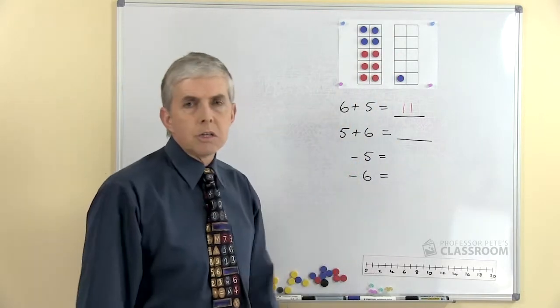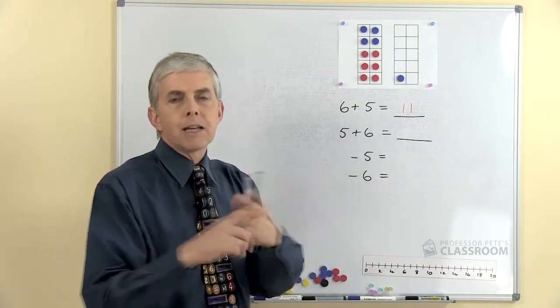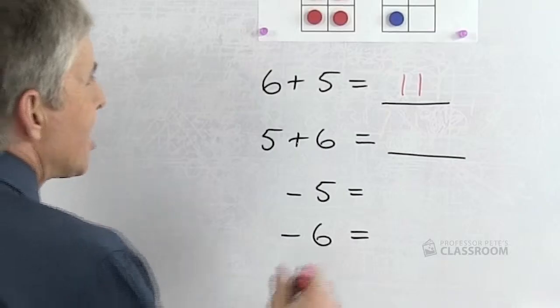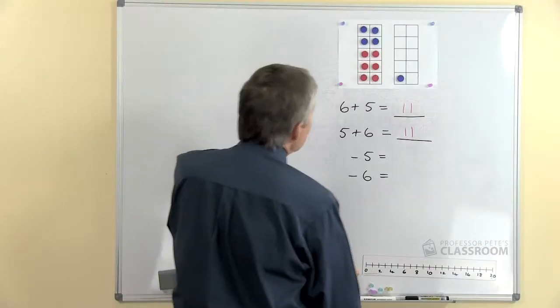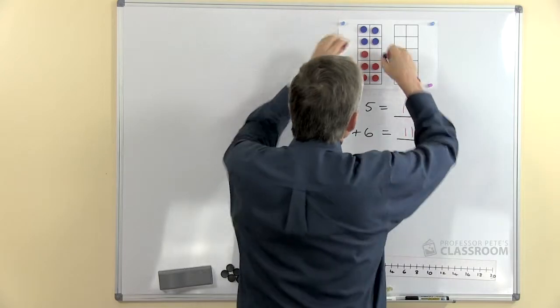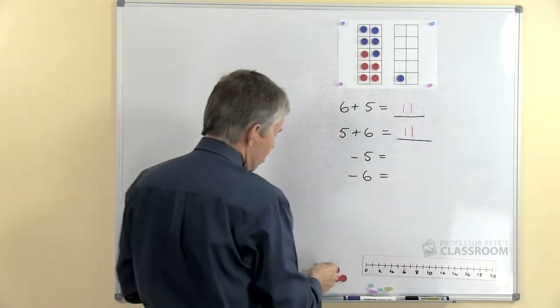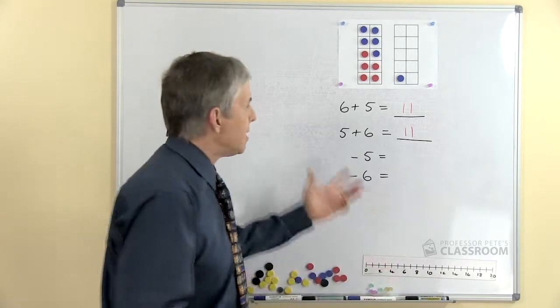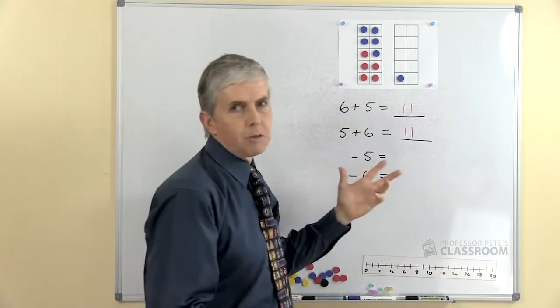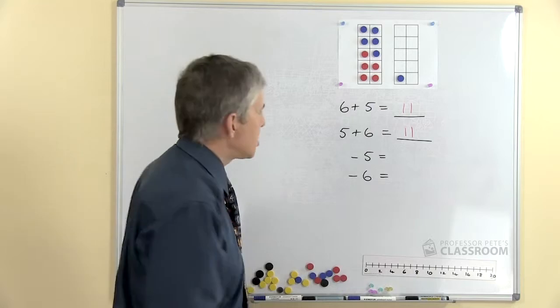Then we can talk to students about the turnaround fact, the commutative fact if you like—5 plus 6, of course that's 11 as well. If we wanted to really prove it, we're going to need one more blue, so we can say there are five red ones and six blue ones. Obviously we haven't changed the result. So children won't find that difficult to see that those are really both the same.